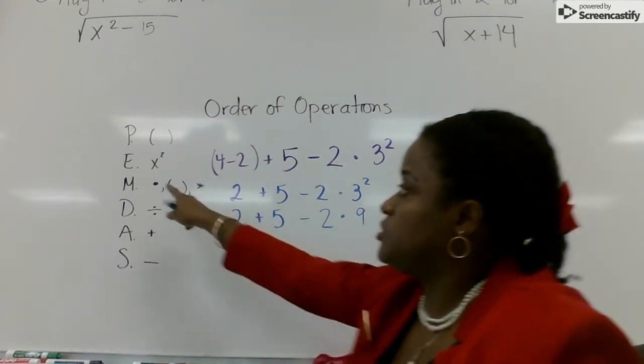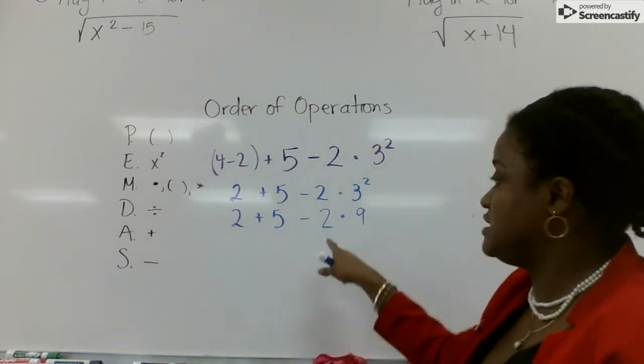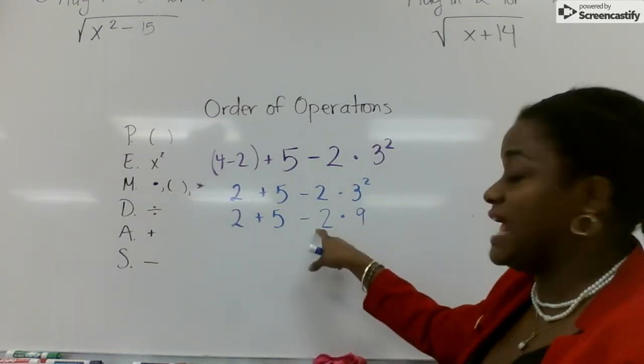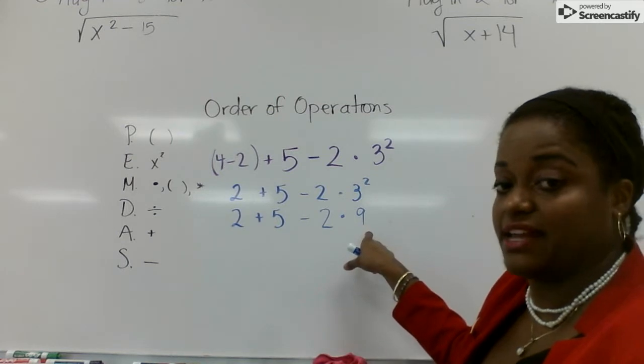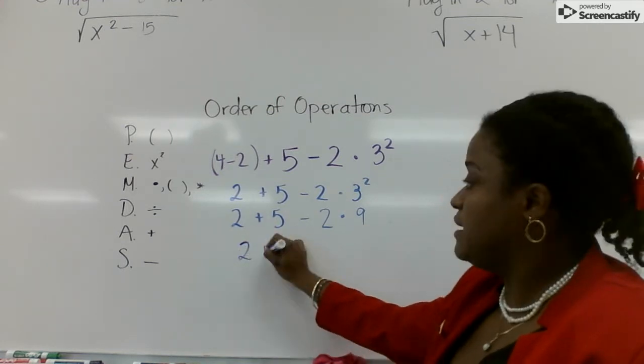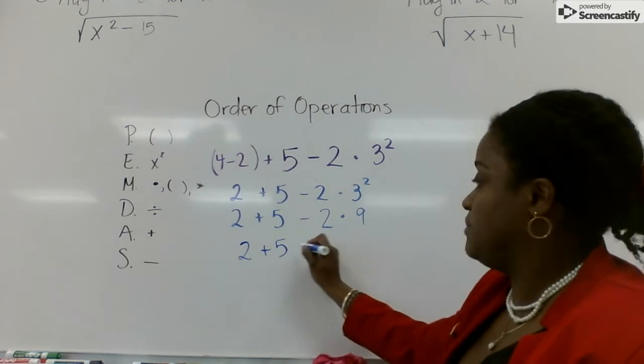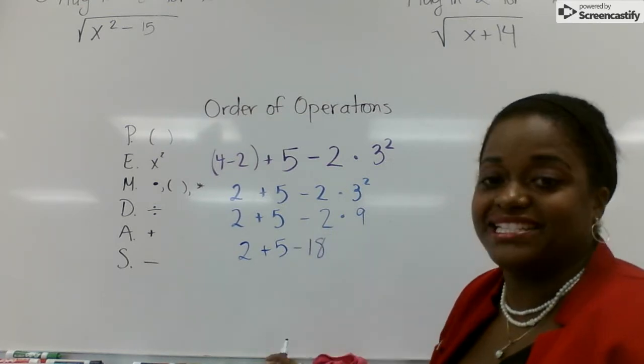All right, next we do multiplication. Do you see multiplication? Yeah, right here, that dot. So negative 2 times 9 is negative 18. 2 stays the same. 5 stays the same. Minus 18.